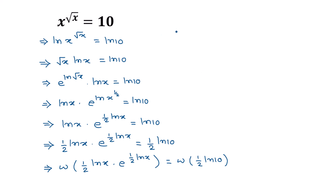Applying the formula W of a times e to the power of a equals a — and applying this to the left side, comparing 1/2 times ln of x as 'a' and e to the power of that term — we can write this as 'a', that means 1/2 times ln of x...